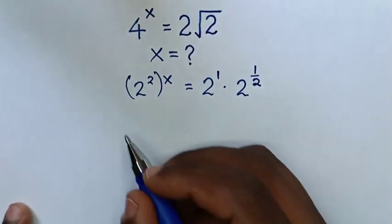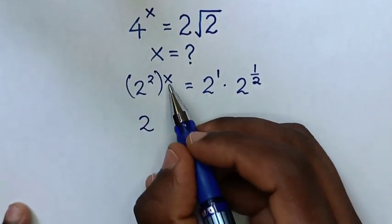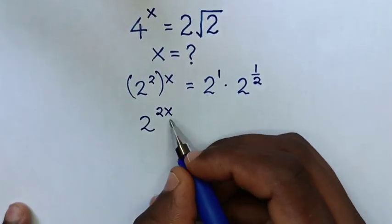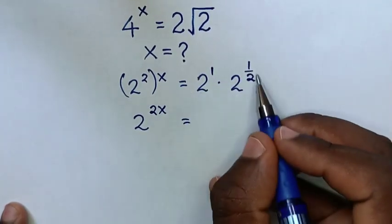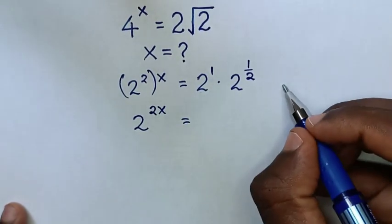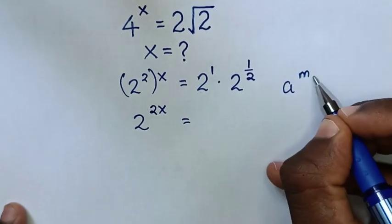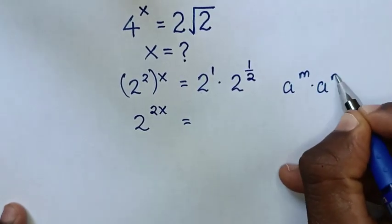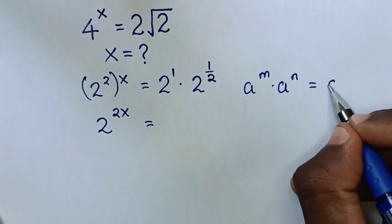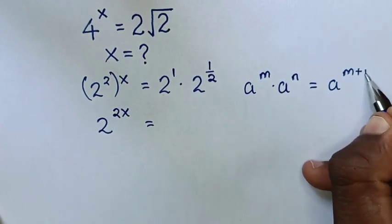Then in the next step, here it will be 2 to the power of, this time, 2x. Then it equals, in here we have multiplication of exponents, so we'll apply the rule: a to the power of m times a to the power of n equals a to the power of m plus n.